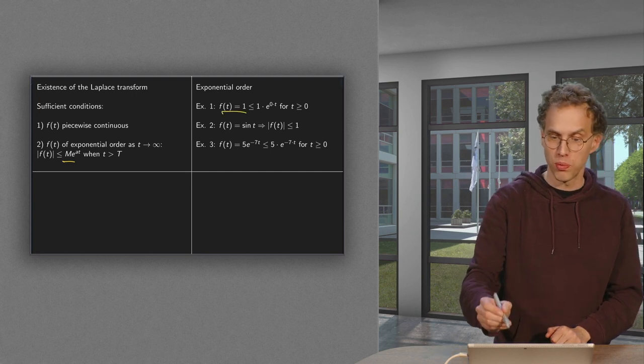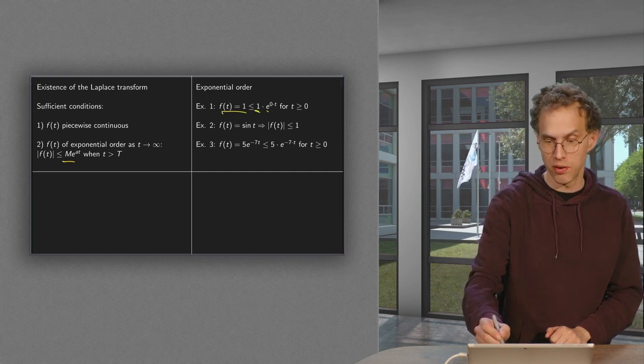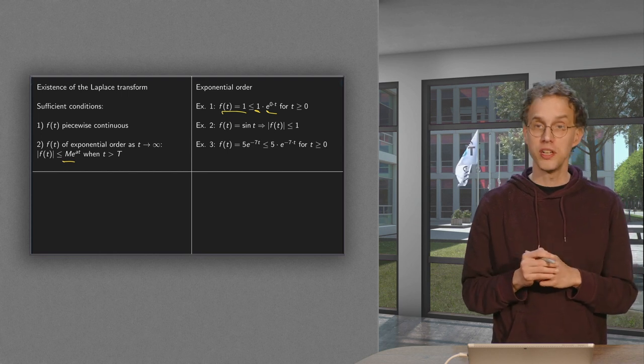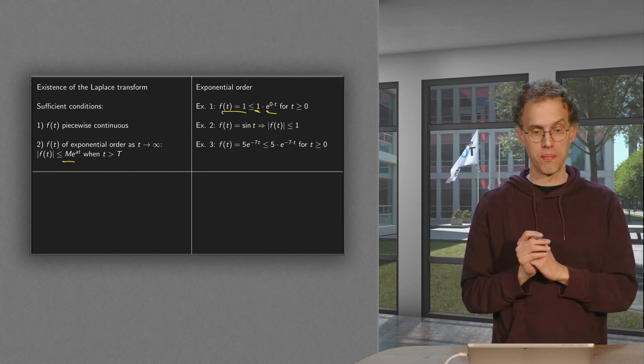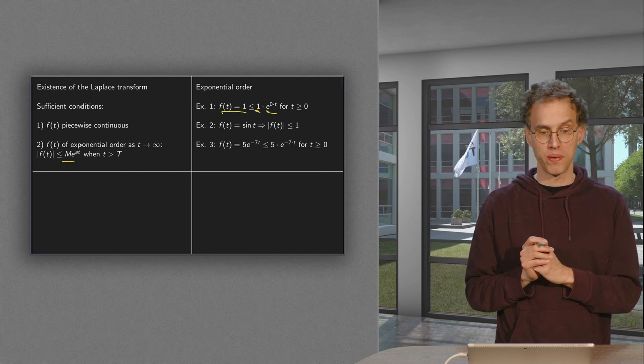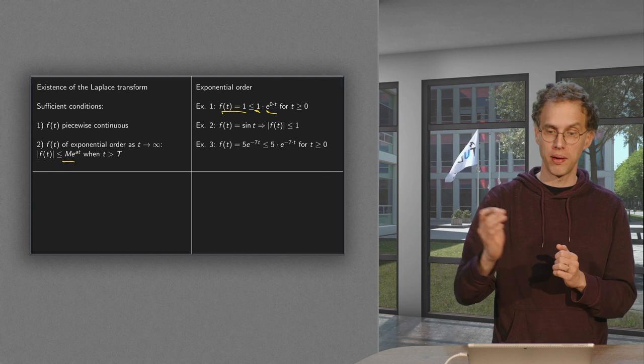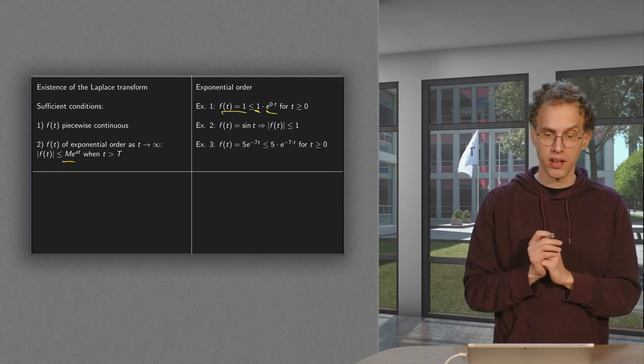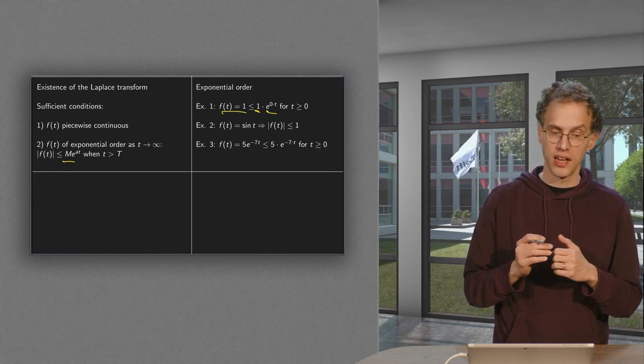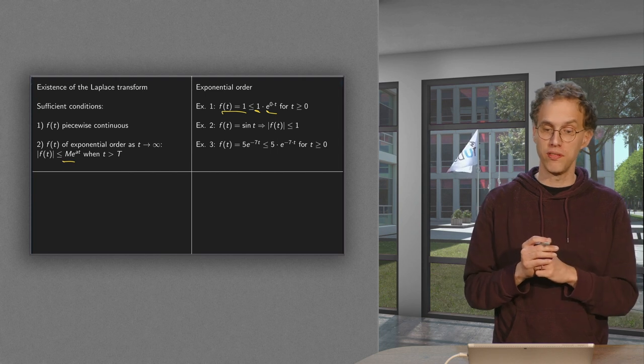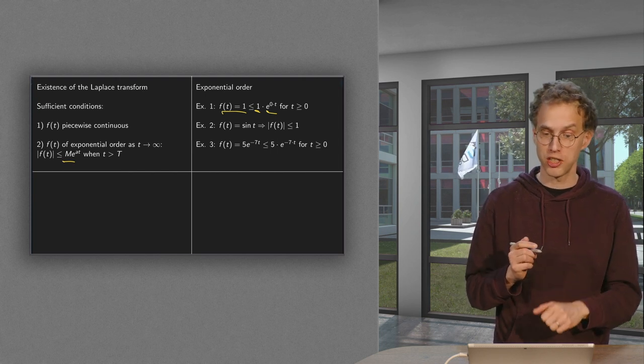Well, 1 is smaller or equal than 1 times e to the 0t, for t positive. So that means you can pick your capital M equal to 1. You can pick your a equals 0. And this shows that for this capital M and this a, our f of t is below M·e^(at), which means that f of t is of exponential order.